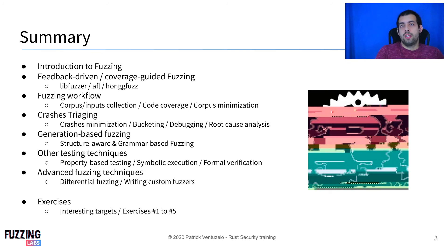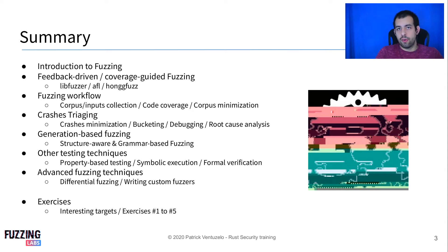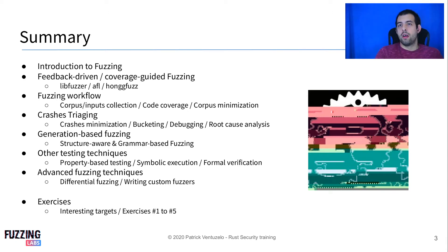The summary is the following. First we're going to do a quick introduction to fuzzing. After that I'm going to discuss about coverage-guided fuzzing — that's the classical fuzzing technique we're going to use for Rust fuzzing. We're going to use three different fuzzing frameworks more specifically: LibFuzzer, AFL, and OncFuzz.